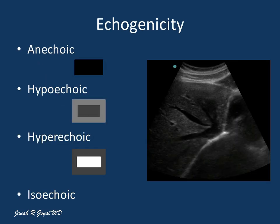The echogenicity of the tissues is described as anechoic, hypoechoic, hyperechoic, and isoechoic.